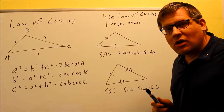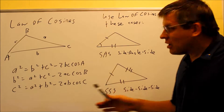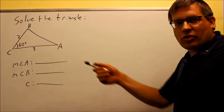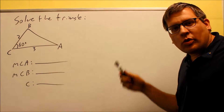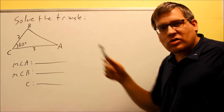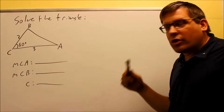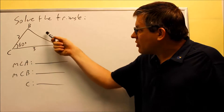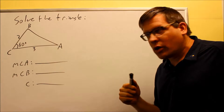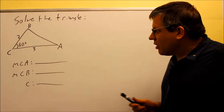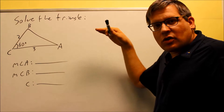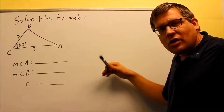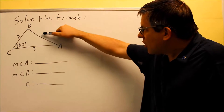Now that we've talked about the law of cosines and when you would use it, let's take a look at an example. Here's an example that illustrates what we just talked about. We have a side-angle-side situation, so that's one instance where you want to use the law of cosines. Notice that we couldn't use law of sines because we don't have a side opposite the given angle — we don't have our given ratio — so that's why we use law of cosines.